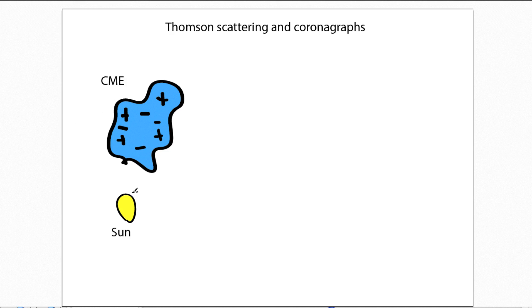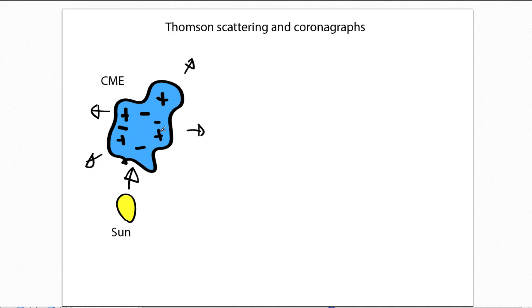From the viewpoint of analyzing coronal mass ejections, what is important is that there is incident light coming from the solar surface — the solar photosphere — and that incident light hits this collection of charged particles contained by the coronal mass ejection. That incident light is then scattered by the cloud to various directions, indicated by these arrows here. The process that creates this scattered light is called Thomson scattering. So we have light coming in and then it's scattered from the charged particles contained by this cloud.